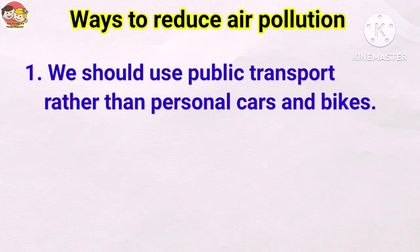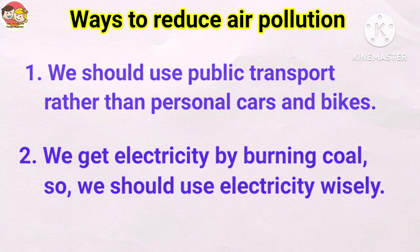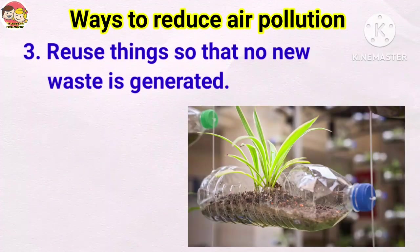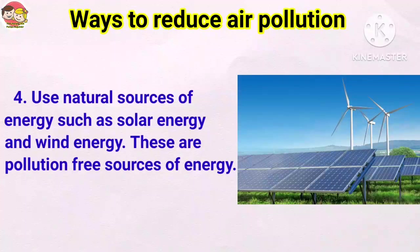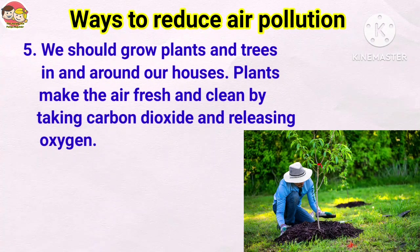How to reduce air pollution: Number one: we should use public transport rather than personal cars and bikes. Number two: we should use electricity wisely, since electricity is generated by burning coal. Number three: reuse things so that no new waste is generated. Number four: use natural sources of energy such as solar energy and wind energy — these are pollution-free sources of energy.